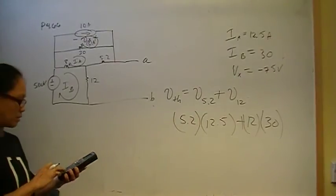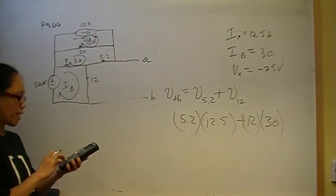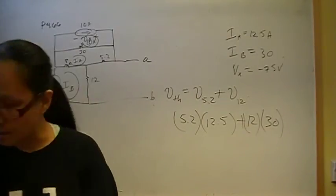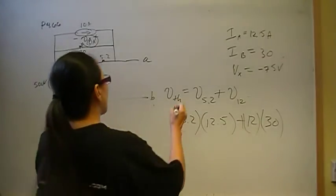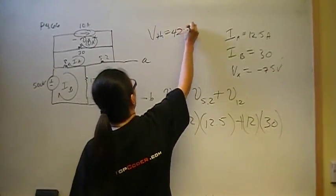Okay. So I've got 5.2 times 12.5 plus 12 times 30. So our V-Thevenin, I'm going to double check. So then our V-Thevenin is 425 volts.